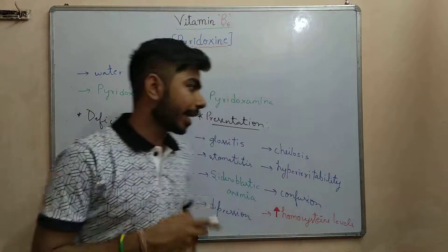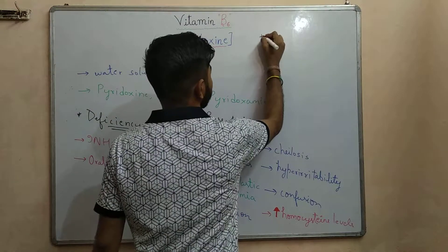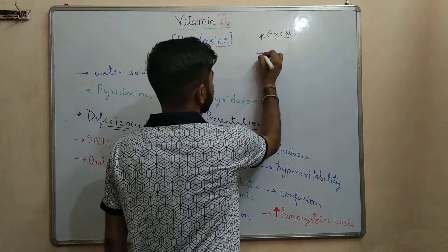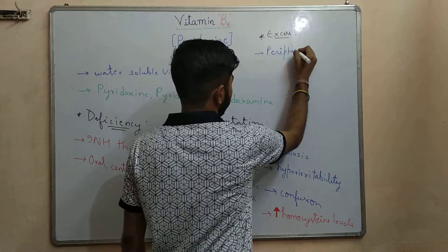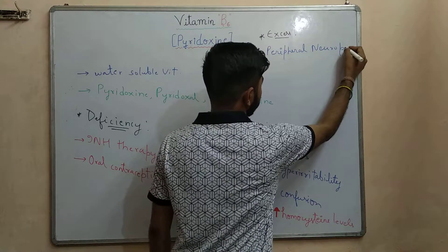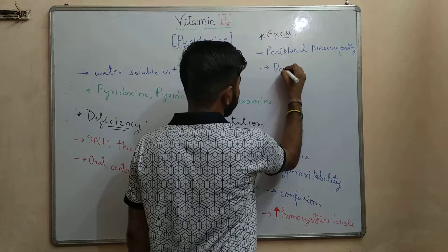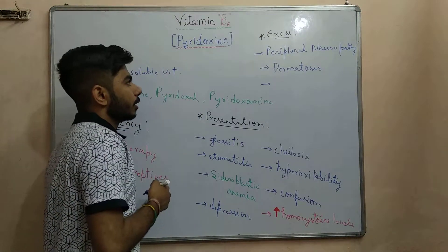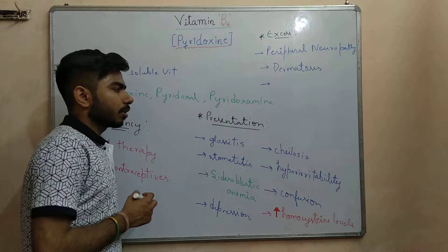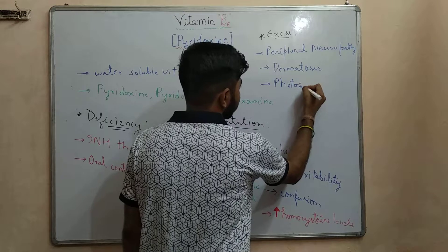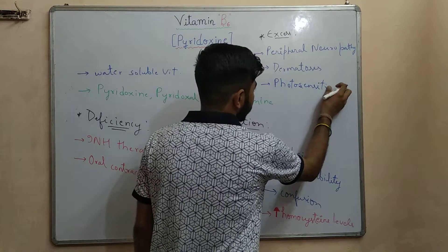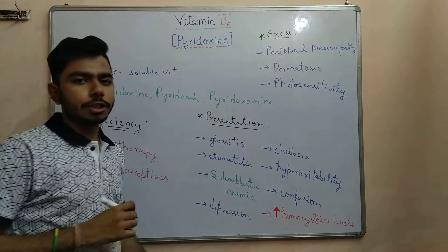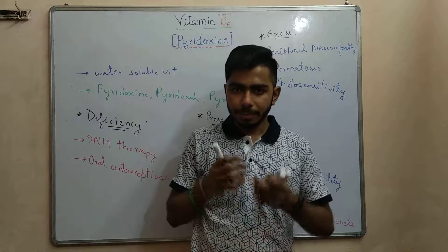Now in excess — what can vitamin B6 cause in excess? In excess it can show peripheral neuropathy. There can also be a problem in the skin, so dermatosis can be seen in such patients if there is excess of vitamin B6 or pyridoxine. And one more thing about the eyes — photosensitivity can be seen, so these patients will not be much comfortable in bright light. So photosensitivity can also be seen in cases of excess of vitamin B6.